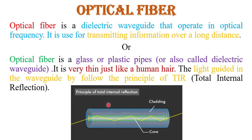In the diagram, the center region shown in green is called the core, and the outer region shown in blue is called cladding. Light enters into the fiber and propagates down the core by following the principle of total internal reflection at the core-cladding interface, making a zigzag path and propagating down the fiber.